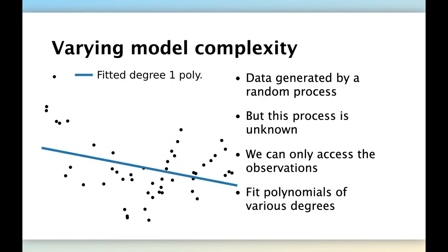Let's fit different models on this data. The first one is the linear model. It's a degree one polynomial. A linear model is a degree one polynomial. Degree zero would be a constant prediction, horizontal line. Degree one, we have a slope, a degree of freedom.